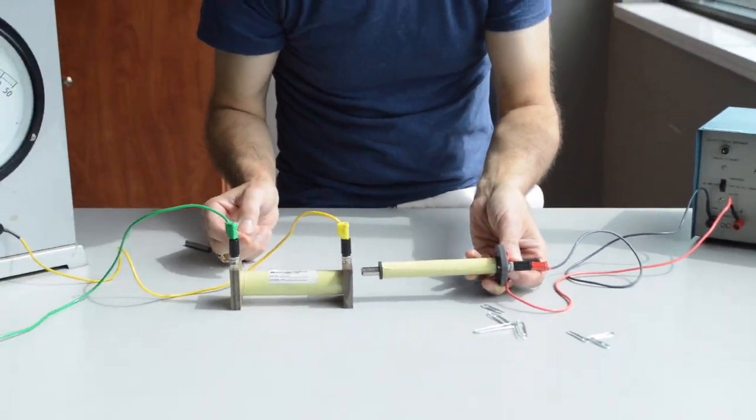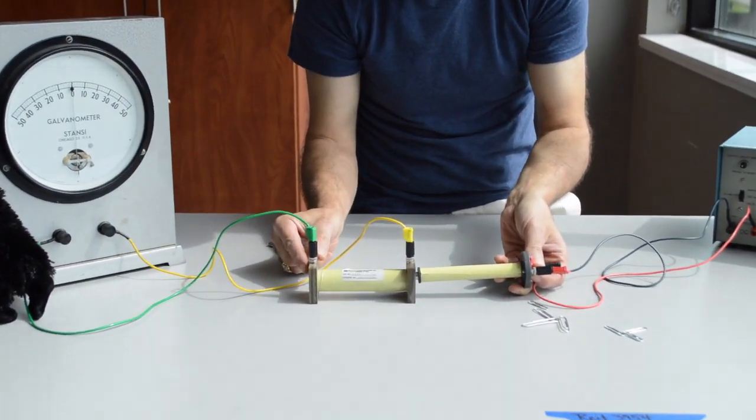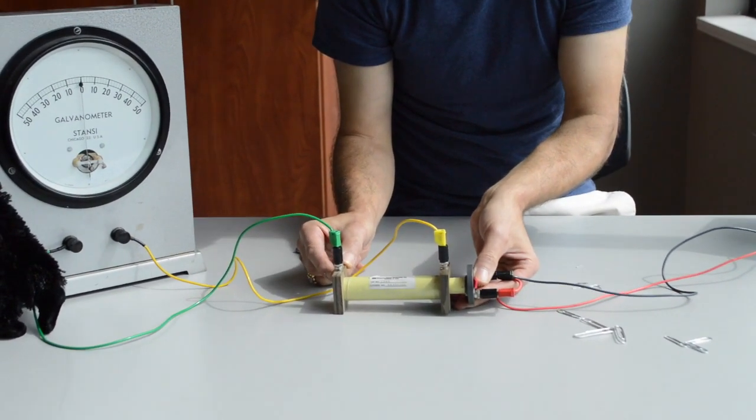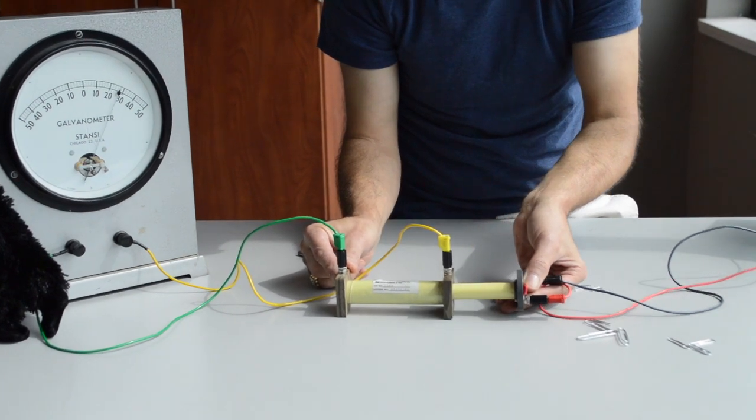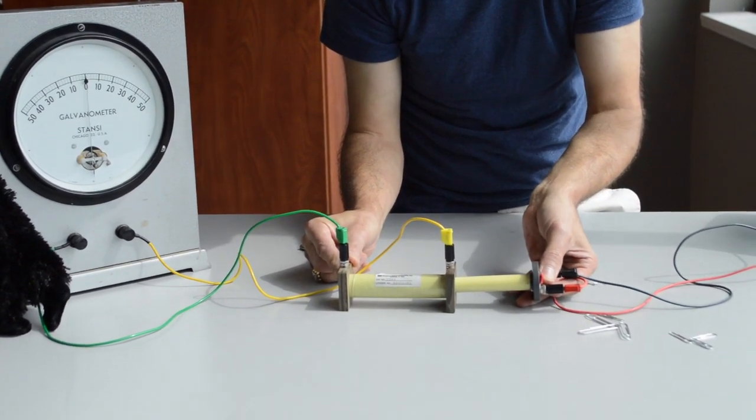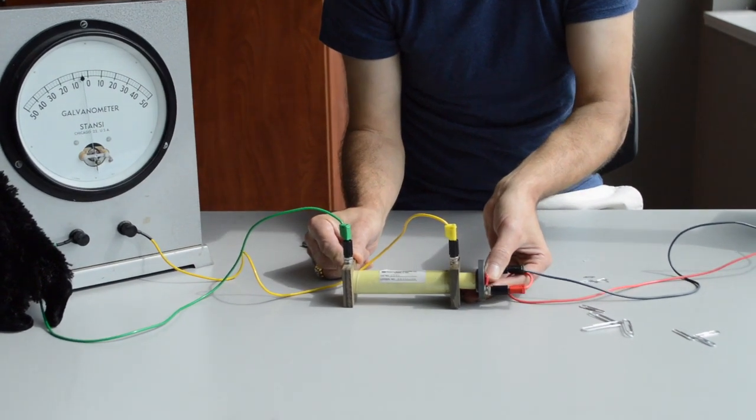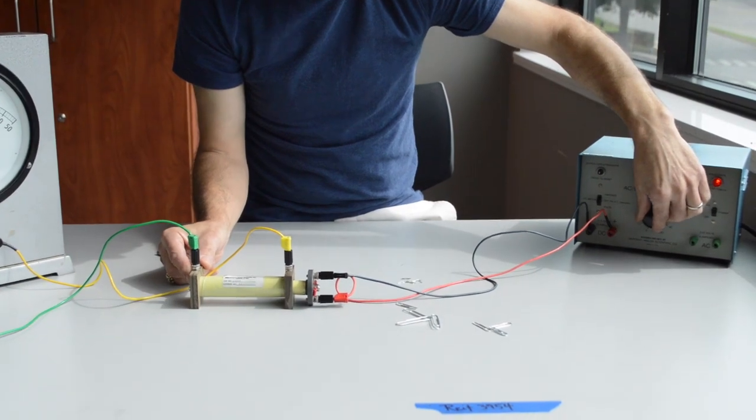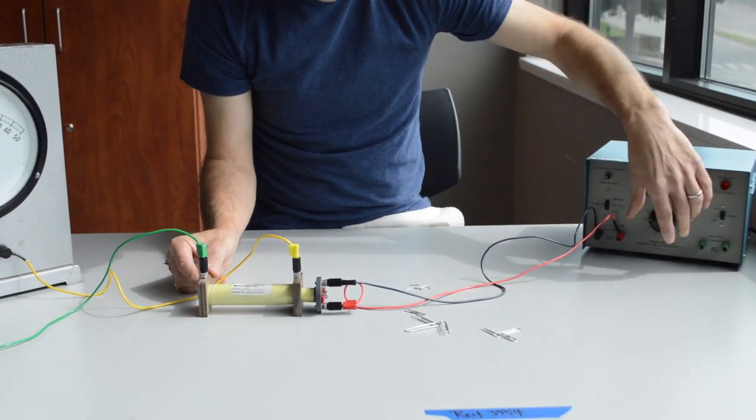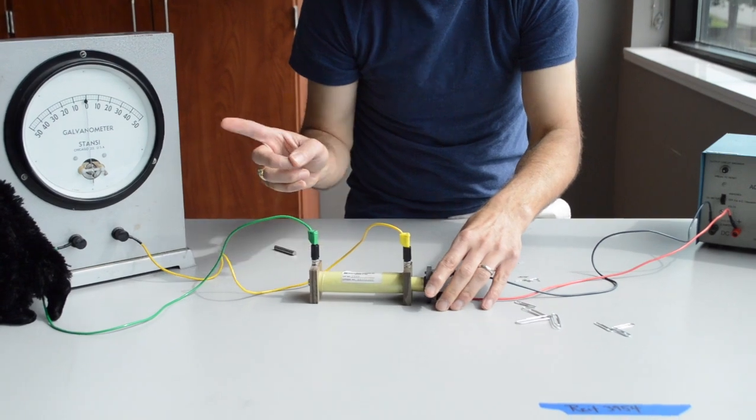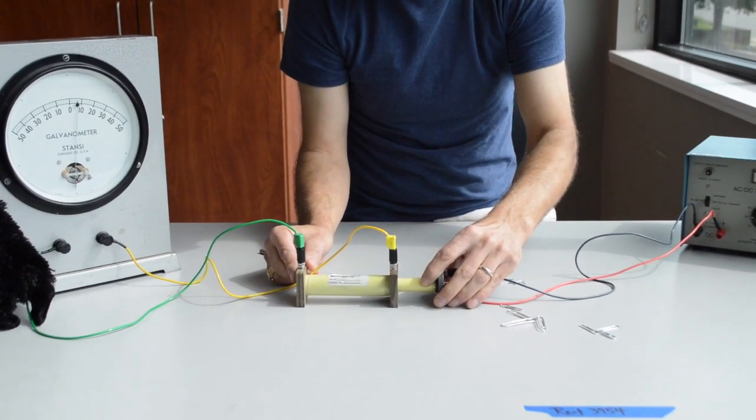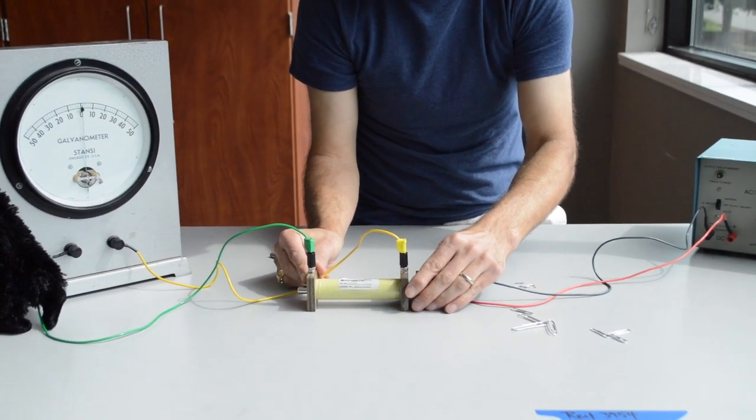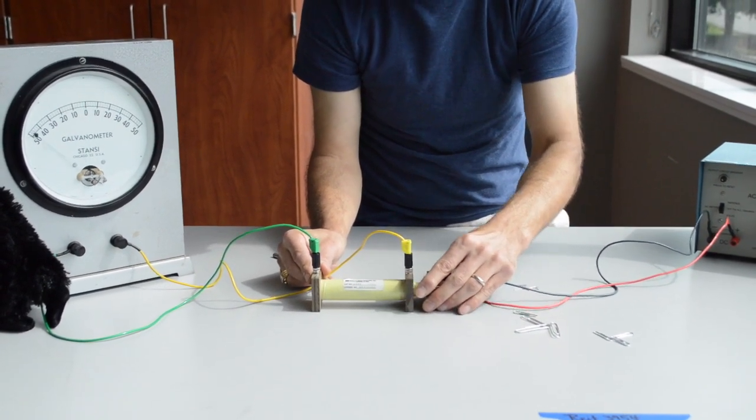Watch the meter needle while I insert the electromagnet into the core. Now you'll notice a very large deflection even when I move the coil slowly. If I turn the electromagnet's power supply up a little bit, you'll notice the meter needle wiggled when I turned it. And now I get even larger deflections. If I move the inner coil rapidly, I can get a full scale deflection.